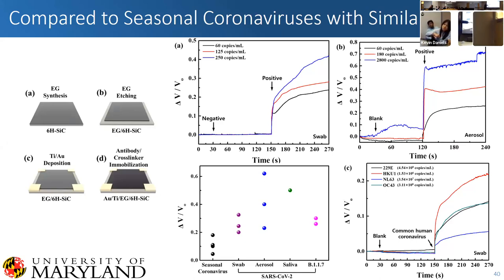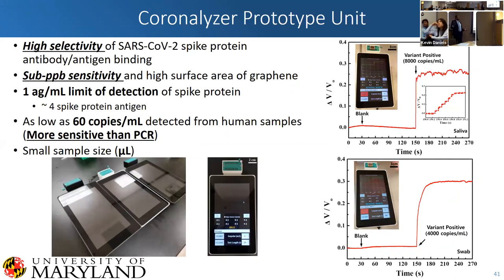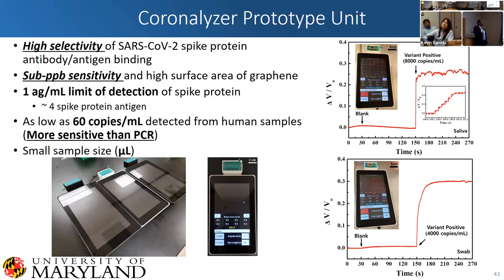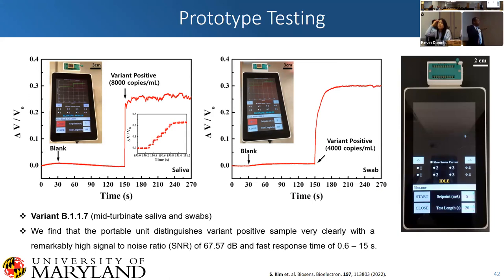We made prototype units we call the Coronalizer — patent pending. We were able to reduce from our $20,000 potential lab stack down to a $300 to $500 portable testing unit. It has a grand limit of detection for spike protein antigen with only a microliter sample size. The unit is all touch screen — this is where we would place our sample. We're getting great responses from variant positive samples. This is the first demonstration of a biosensor built using quasi-freestanding epitaxial graphene: unprecedented speed of detection in one second, measuring down to one attogram per milliliter, 60 copies of the virus, demonstrated across many modalities. We also developed a portable breathalyzer testing unit with an enclosure that has a straw for breath-based detection.